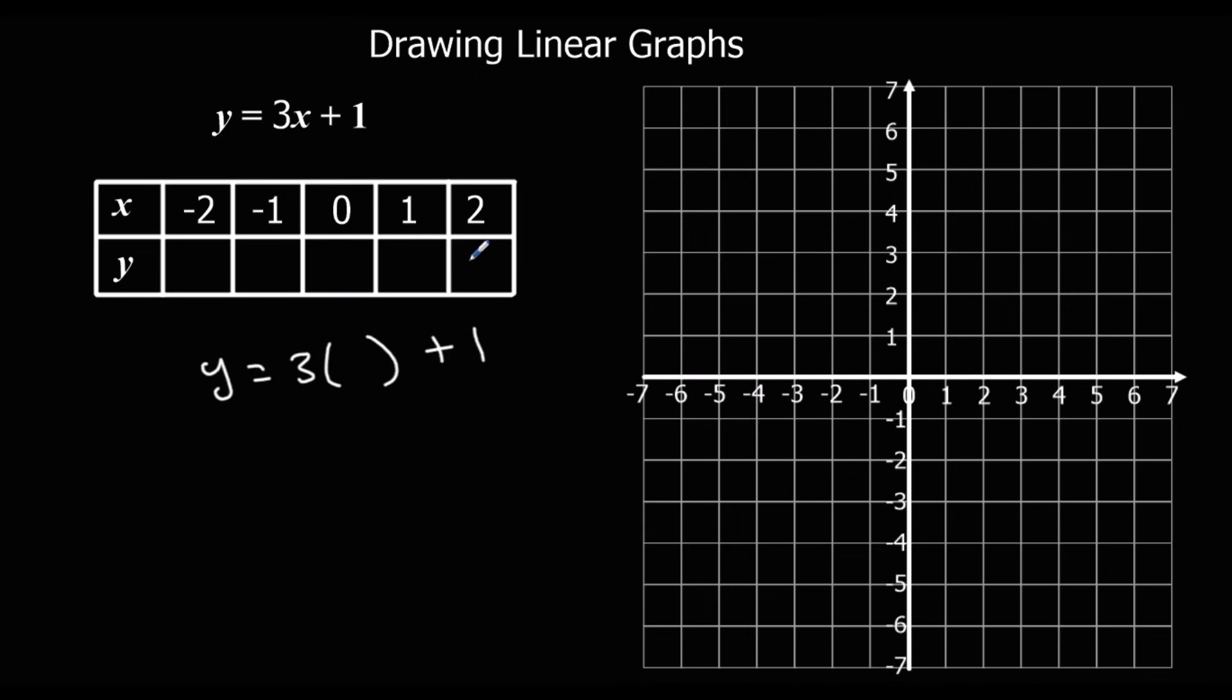So 3 times 2 plus 1 is 7. 3 times 1 plus 1 is 4. And then we should have got a pattern going up in 3's each time.